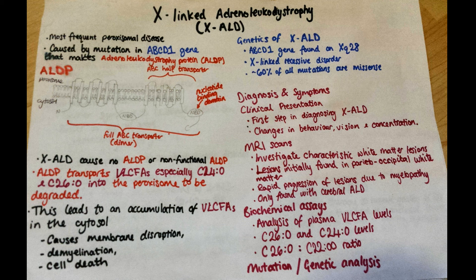X-linked adrenoleukodystrophy, or XALD, is the most frequent peroxisomal disease, with 1 in 20,000 to 50,000 people having the disease. It is a single peroxisomal protein deficiency caused by the mutation of the ABCD1 gene that codes for adrenoleukodystrophy protein, or ALDP.